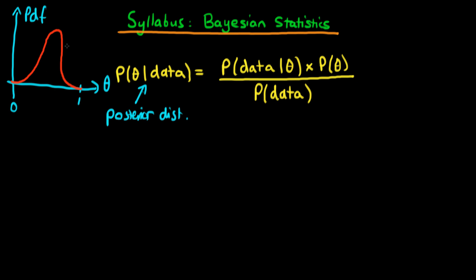By virtue of the fact that this is a probability, obviously the area underneath this curve has to sum to 1. That's the goal of Bayesian inference, but how do we actually obtain that goal? We obtain it via this formula and via the terms on the right-hand side. In the numerator, the first term — the probability of the data given theta — is what we call the likelihood.